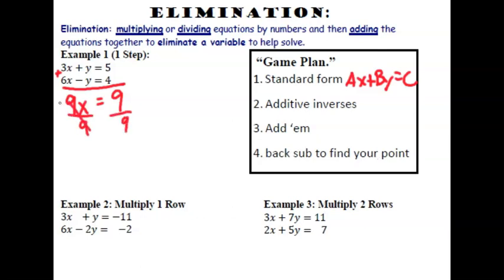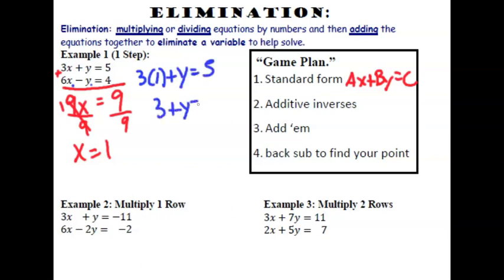Divide by 9 and we get x equals 1. We're going to plug this into one of the two equations to solve for y. Let's plug back into equation 1: 3 plus something equals 5, so that something is 2. So y equals 2, and your solution point would be 1 comma 2.